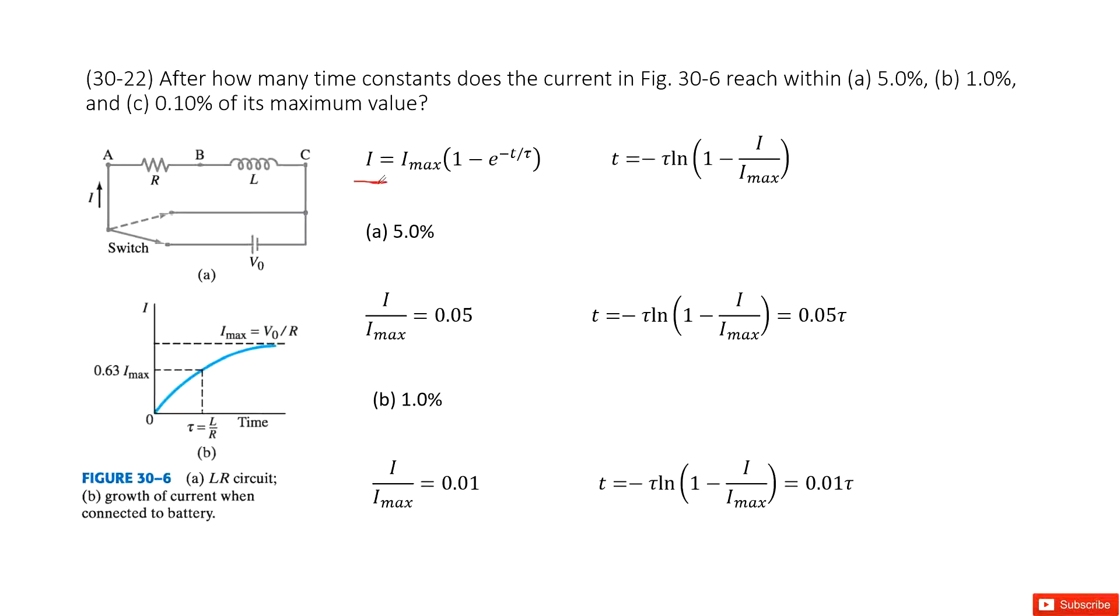Now we need to find in three cases how much time is needed for the current to reach 5% of its maximum value, or 1% of its max value, or 0.1% of its maximum value.